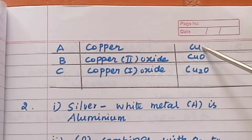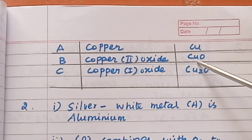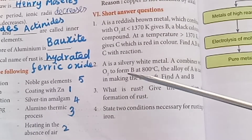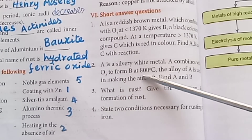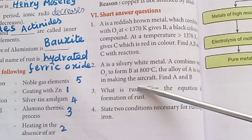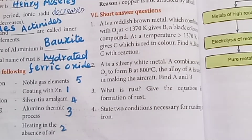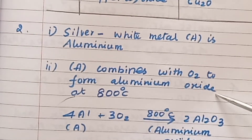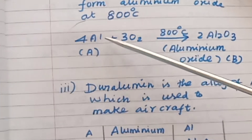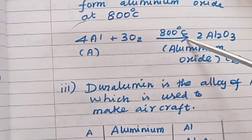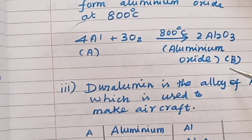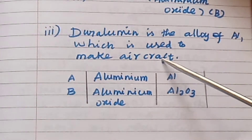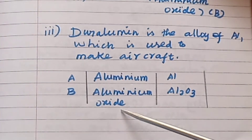So the answers are: A = copper (Cu), B = copper 2 oxide (CuO), C = copper 1 oxide (Cu2O). Question 2: A is a silvery white metal. A combines with oxygen to form B at 800 degrees Celsius. The alloy of A is used in making aircraft. Find A and B. Answer: A is aluminium (Al). It combines with oxygen to form aluminium oxide (Al2O3) at 800°C: 4Al + 3O2 → 2Al2O3. B = aluminium oxide (Al2O3). The alloy duralumin is used to make aircraft.